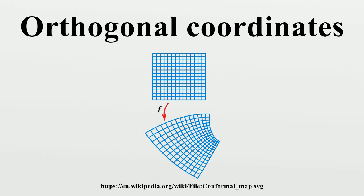In mathematics, orthogonal coordinates are defined as a set of d-coordinates q in which the coordinate surfaces all meet at right angles. A coordinate surface for a particular coordinate qk is the curve, surface, or hypersurface on which qk is a constant. For example, the three-dimensional Cartesian coordinate system is an orthogonal coordinate system, since its coordinate surfaces x equals constant, y equals constant, and z equals constant are planes that meet at right angles to one another, i.e., perpendicular.